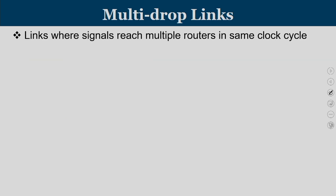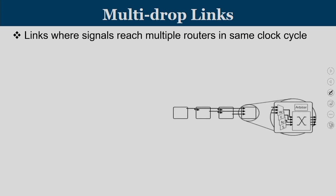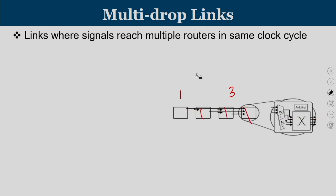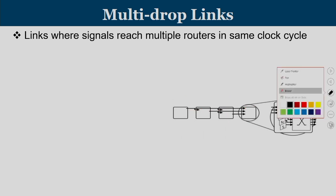What is the idea of multi-drop links? Can we design links where signals reach multiple routers in the same clock cycle? We have the first, second, third, and fourth router, and specially designed links known as multi-drop links. A signal starting from one router can get off at router 2, 3, or 4. So that is called multi-drop links — it is something like an express highway channel.